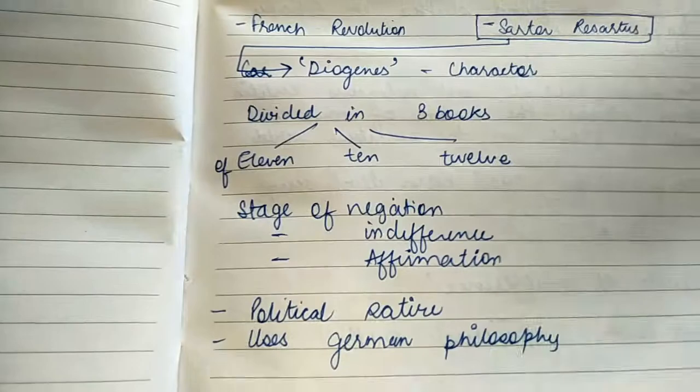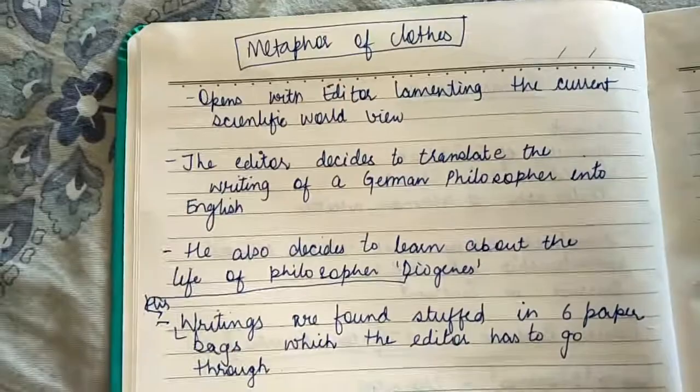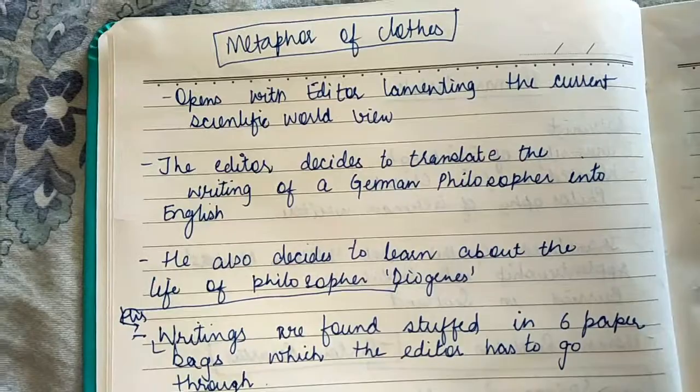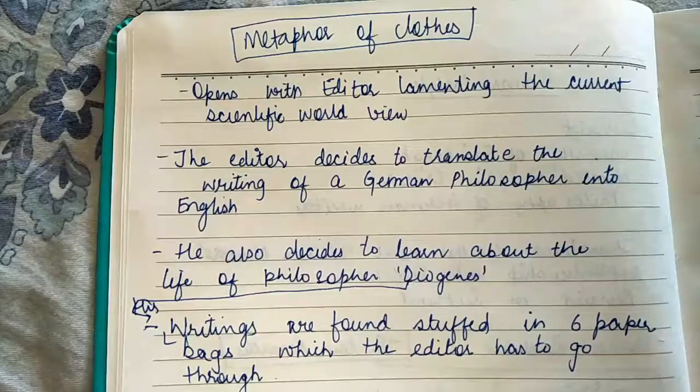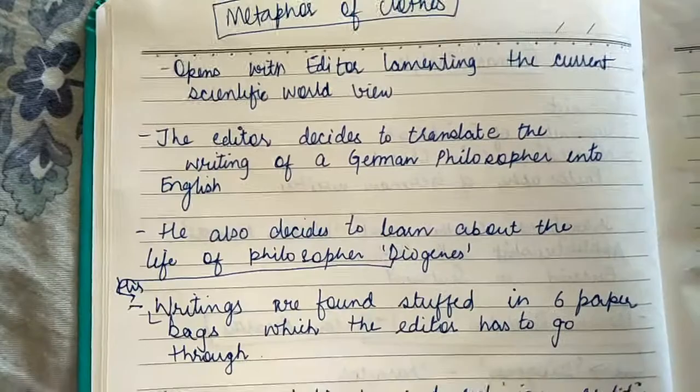This is a political satire and, as discussed, Carlyle uses German philosophy. He uses the metaphor of clothes. The book opens with the editor lamenting the current scientific worldview, and he satirizes everything about the Victorian era.